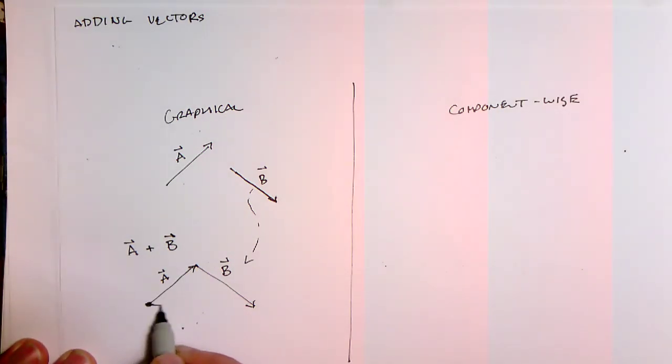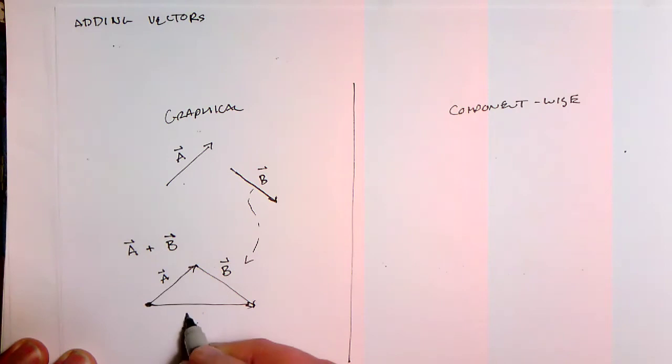And then the vector A plus B is the vector that starts at the tail of A and goes to the head of B. It's easier to think if you think about this in terms of giving someone directions. You go a certain distance in one direction and then you go some other distance in a different direction, and the final point you end up at is the connection between the place you started and the place where you end up. So that's how you add vectors graphically.